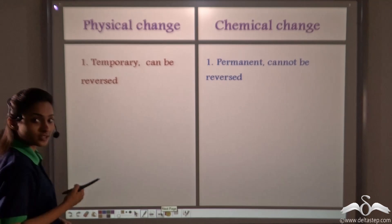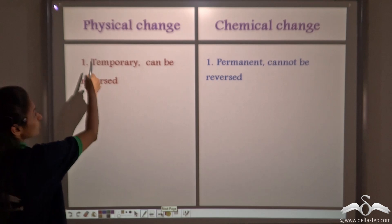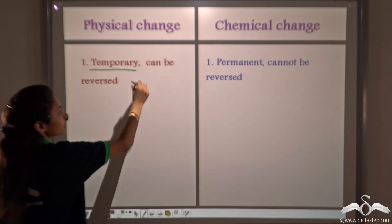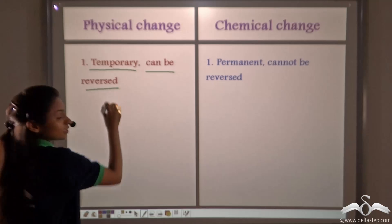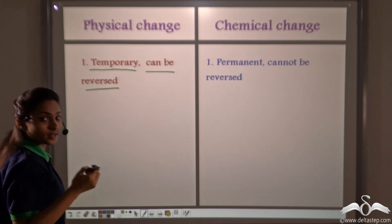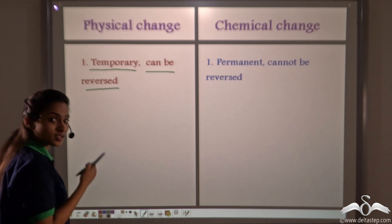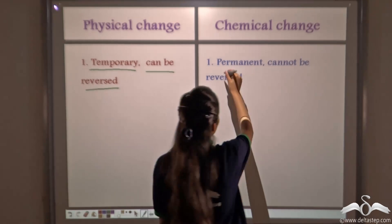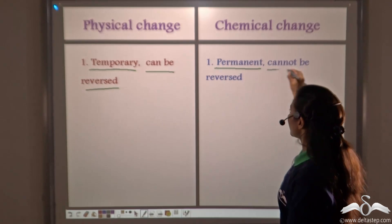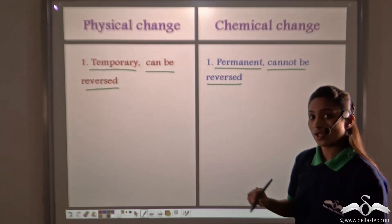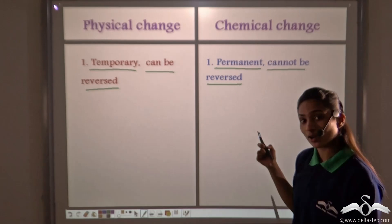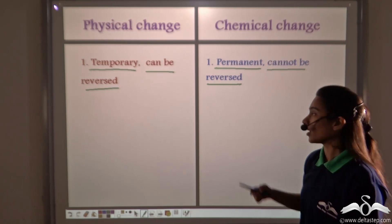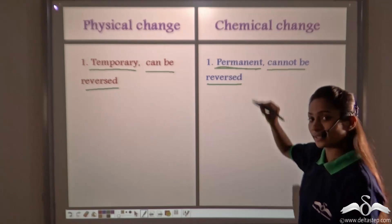So what are the differences between physical and chemical changes? First of all, a physical change is a temporary change as it can be reversed. Just in our example of the ice cream, the melted ice cream can be reversed back to the frozen ice cream. A chemical change, on the other hand, is a permanent change — it cannot be reversed. In our example of burning of wood, can you reverse it back to form the same tree? No, it is always a permanent change.